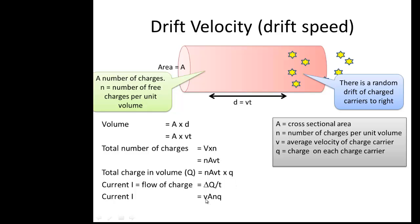V is the drift velocity, A is the cross-sectional area of the wire, n is the number of charge carriers per unit volume, and q is the charge on each charge carrier.